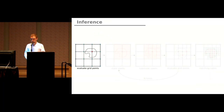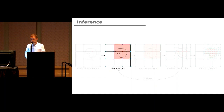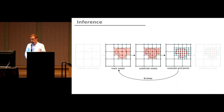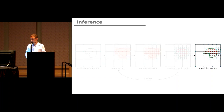During inference, we first evaluate the occupancy network at an initial coarse resolution, then incrementally build an octree by marking active voxels, subdividing them, and evaluating the network at newly introduced grid points. Finally, we extract meshes using the marching cubes algorithm.